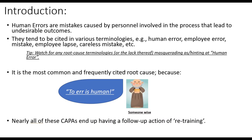Human errors are mistakes caused by personnel involved in the process that lead to undesirable outcomes. They tend to be cited in various terminologies — for example: human error, employee error, mistake, employee lapse, careless mistakes, etc. So watch out for any of those root cause terminologies that are ultimately masquerading as human errors.